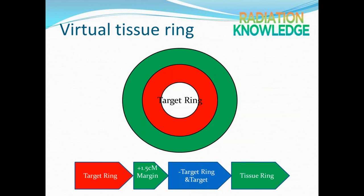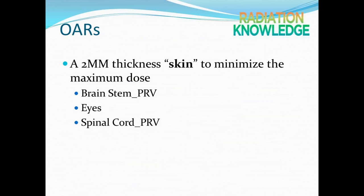This is very important for the conformity index. During the contouring part, we sometimes use a 2mm thickness skin structure to minimize the maximum dose from some targets that are very near to OARs — for example, the brainstem, the eyes, and the spinal cord. We use this skin structure, called skin OARs, for the optimization process.